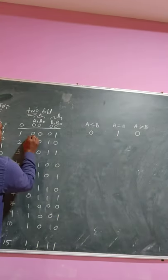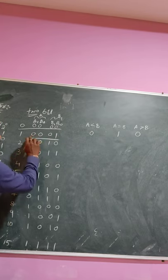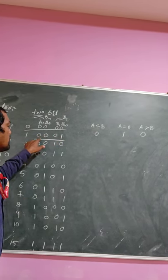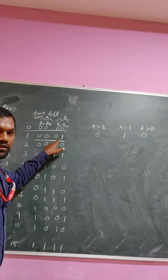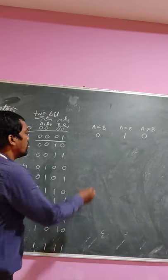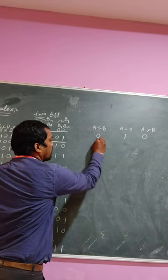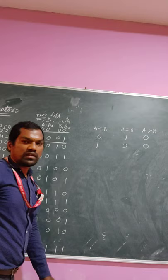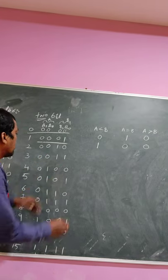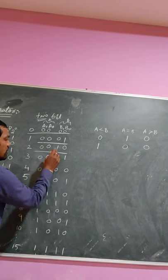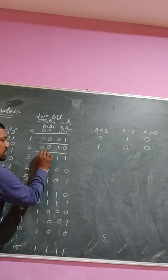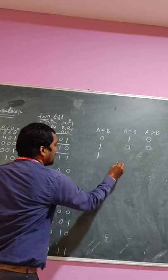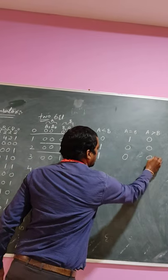Coming to the next entry: 0, 0, 0, 1 — A value is less than B. So we require A less than B output as 1. The remaining outputs become 0, 0. Also for the next case: A variable value is 0, 0, so A less than B becomes 1, and remaining output is 0, 0.